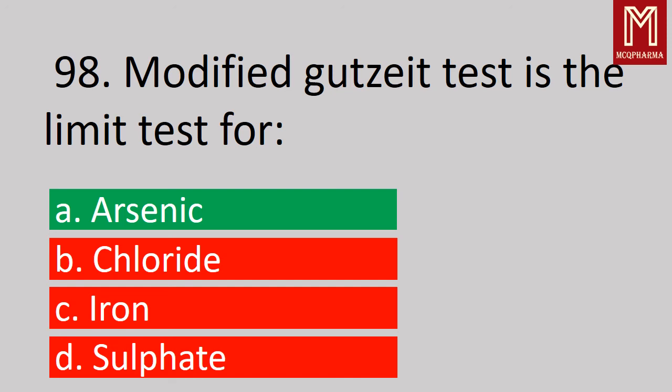Next, the modified Gutzeit strip test is the limit test for — correct answer, Option A: Arsenic.